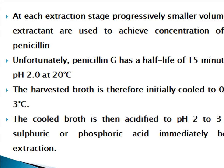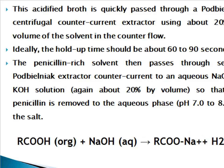At each extraction stage, progressively smaller volumes of extractant are used to achieve concentration of the penicillin. Unfortunately, penicillin G has a half-life of only 15 minutes at pH 2 and 20°C. The harvested broth is therefore initially cooled to 0°C to 3°C. The cooled broth is then acidified to pH 2–2.3 with sulfuric or phosphoric acid immediately before extraction.